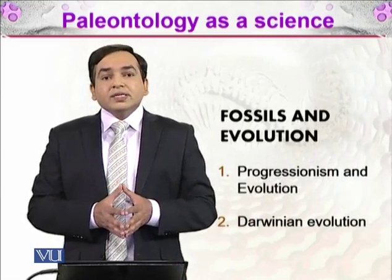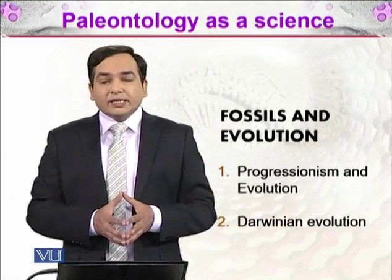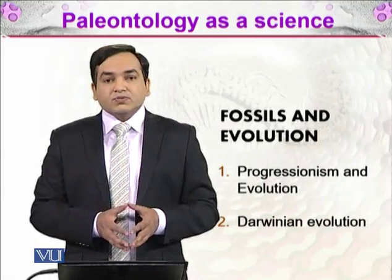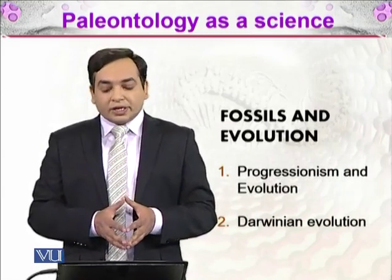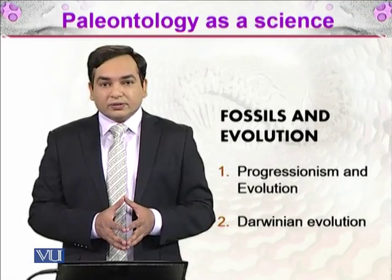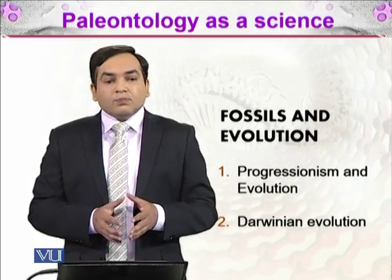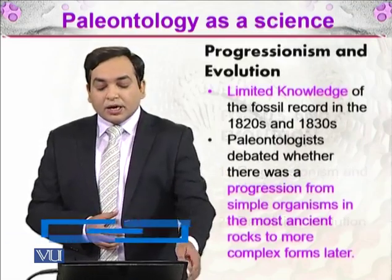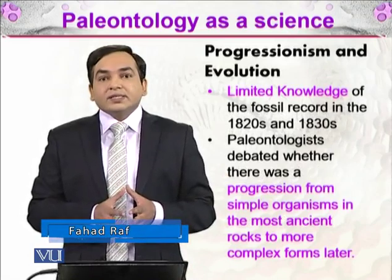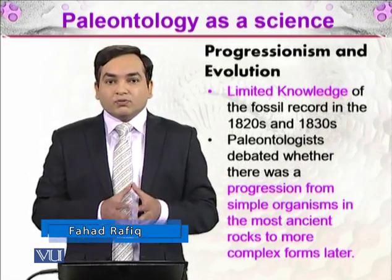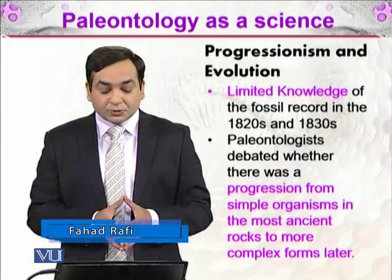In this topic, we will be discussing mainly two subjects: progressionism and evolution, and Darwinian evolution. Progressionism is an idea that tells us how life evolved from simple forms to complex forms.